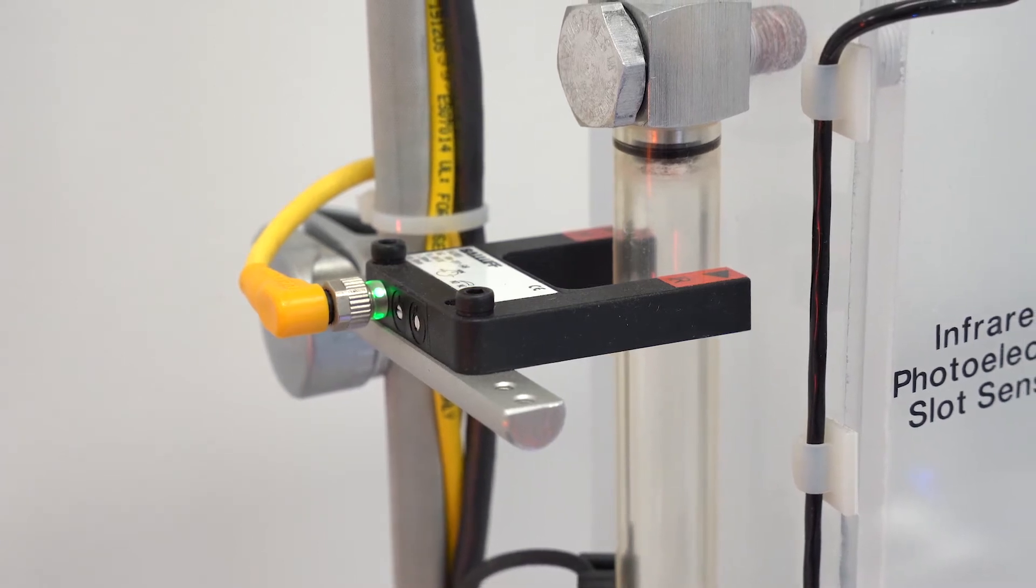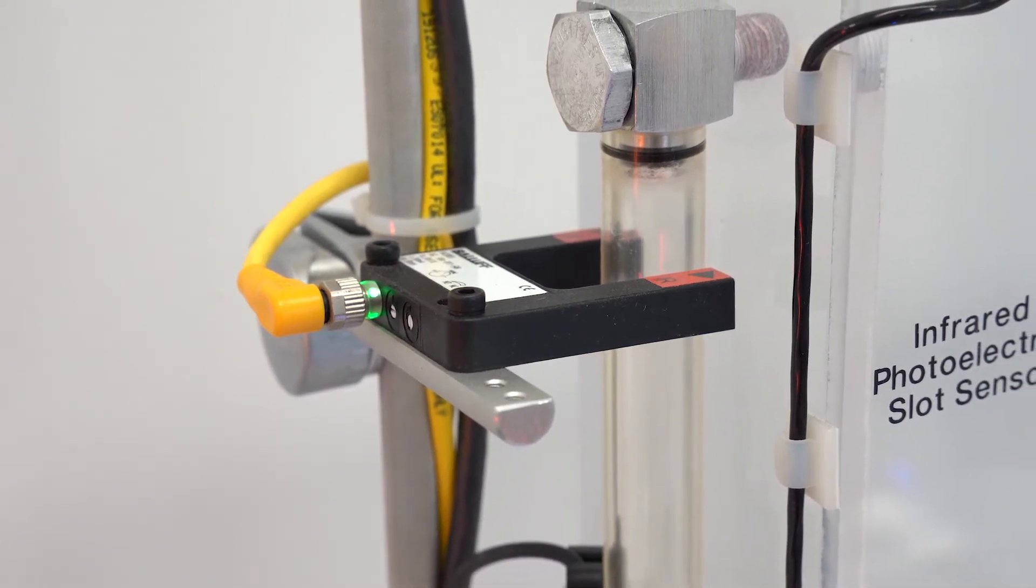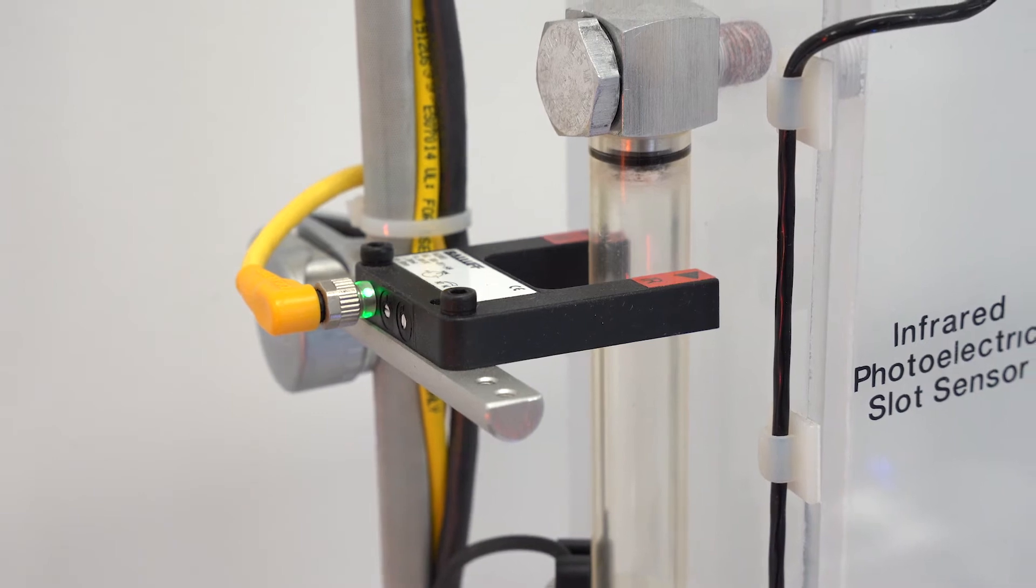So it's on the sight glass. When the level gets to the top, the sensor then triggers the pump to turn off so we don't overflow the tank.